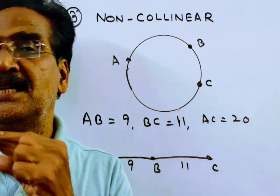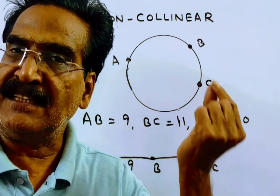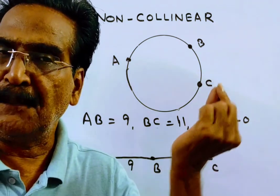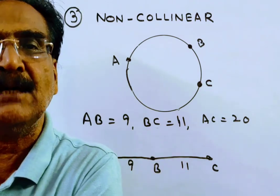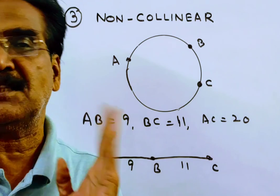If the given three points are collinear—that is, if they lie on the same straight line—we cannot draw any circle passing through these three points.